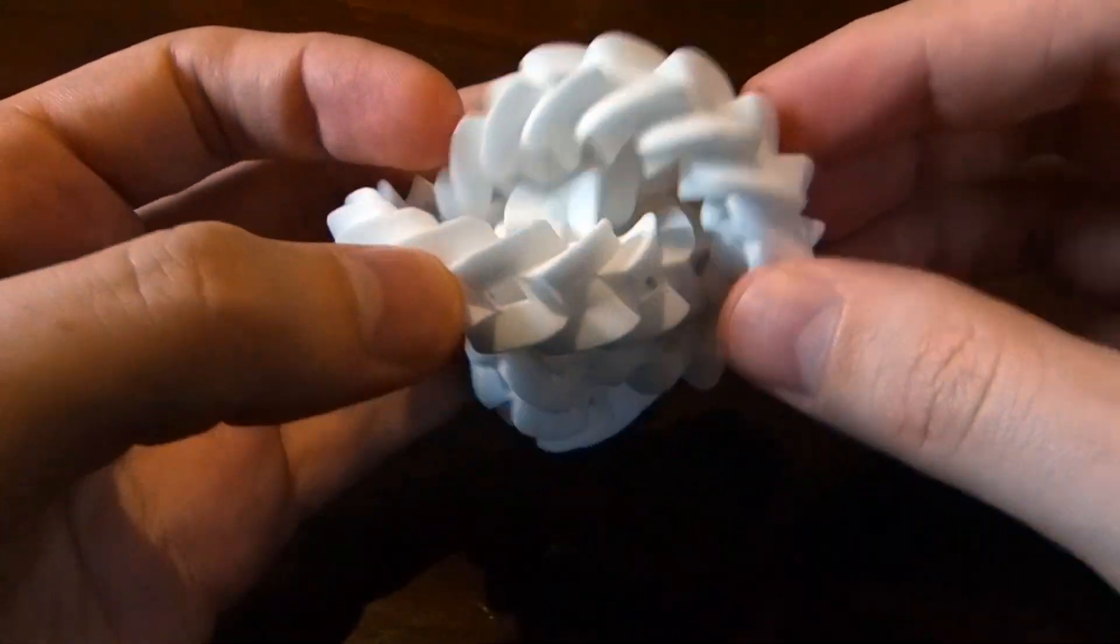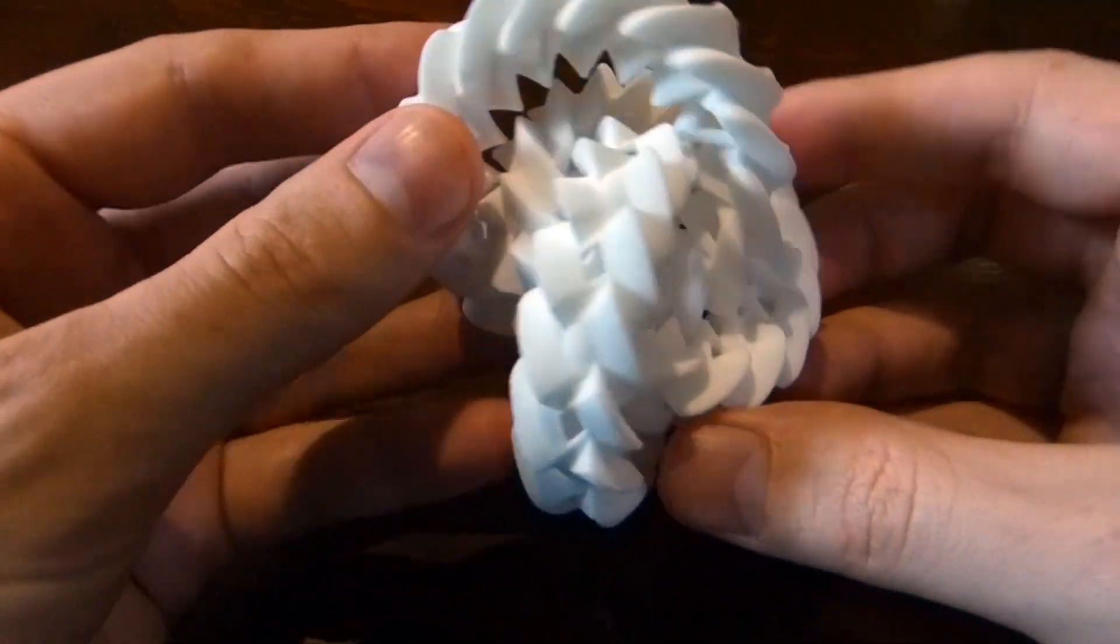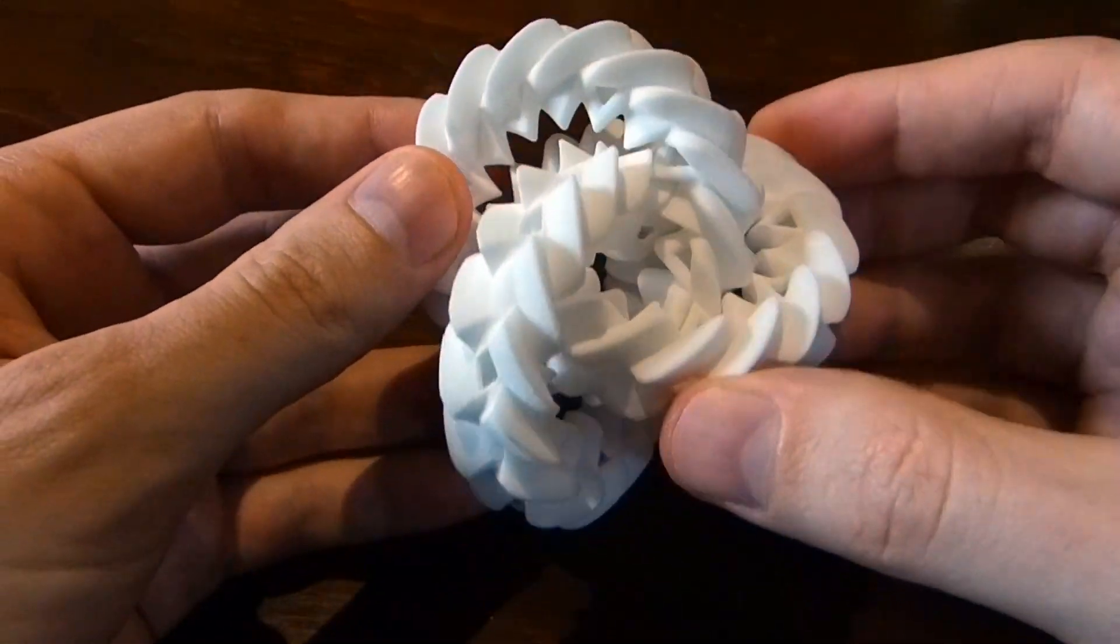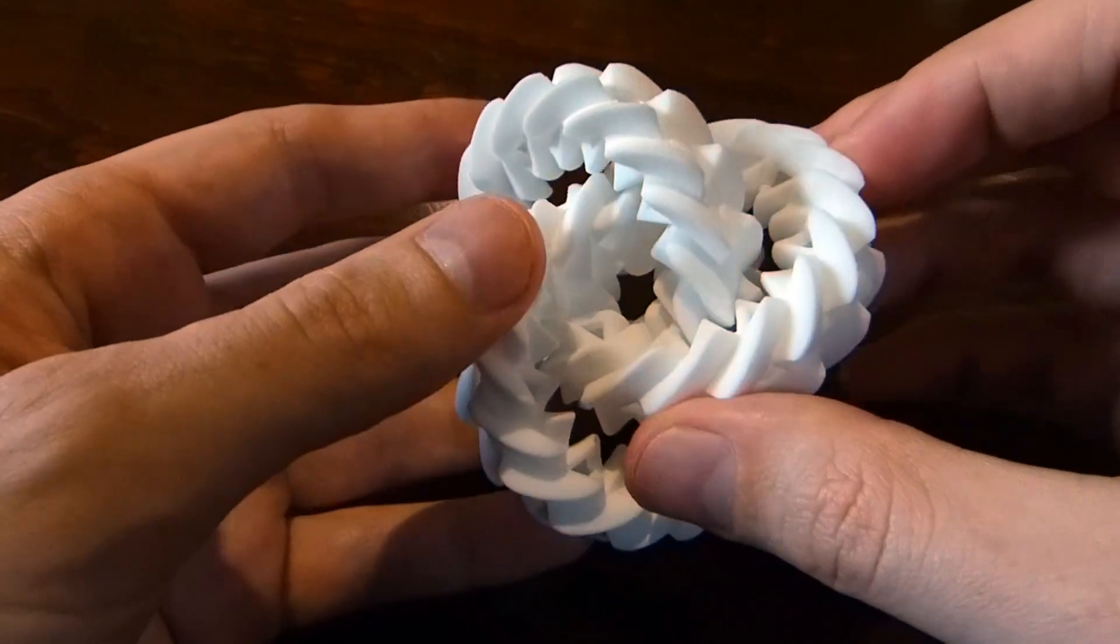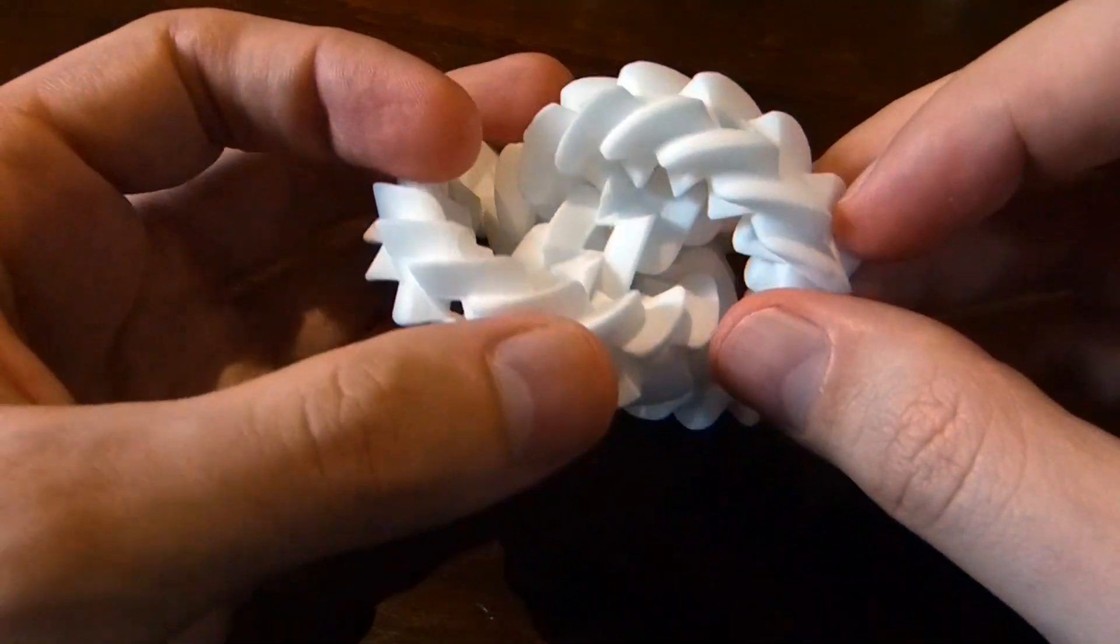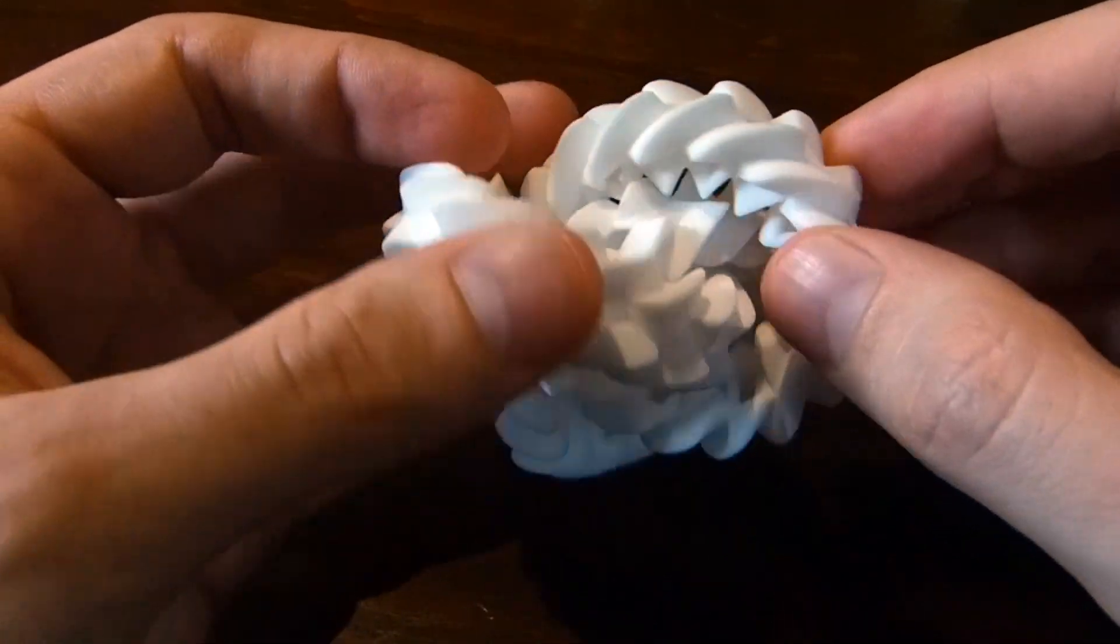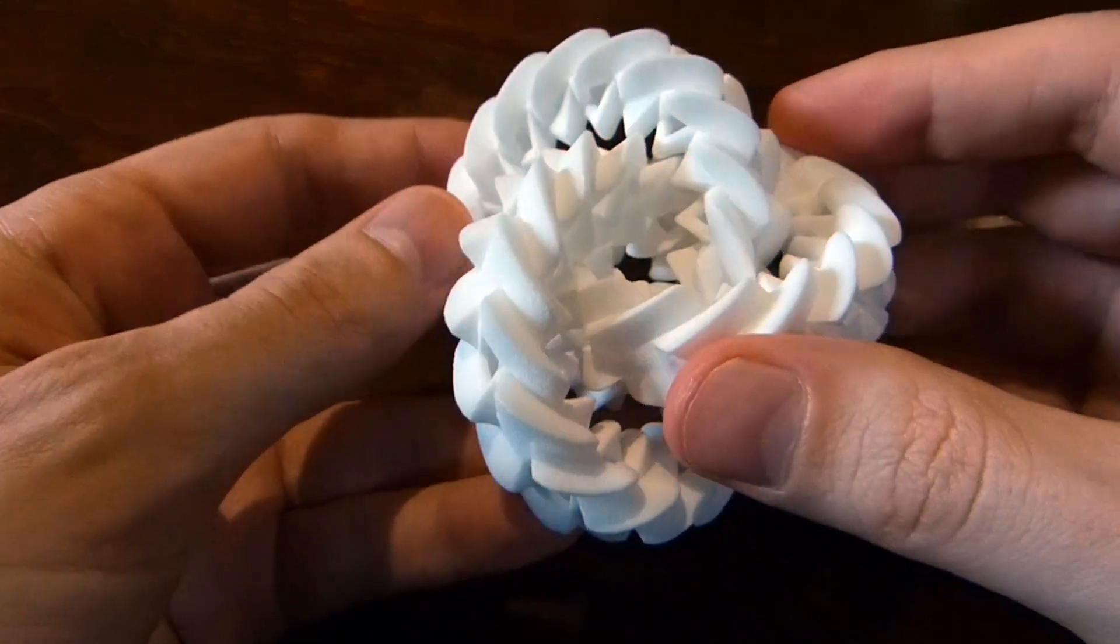So what is this? There are three rings and they're all linked with each other. So each one is linked with each of the other two, and they have this gearing pattern on the outsides of them.